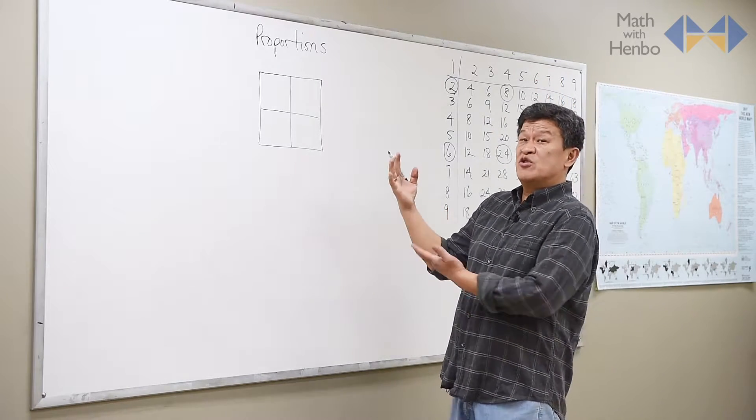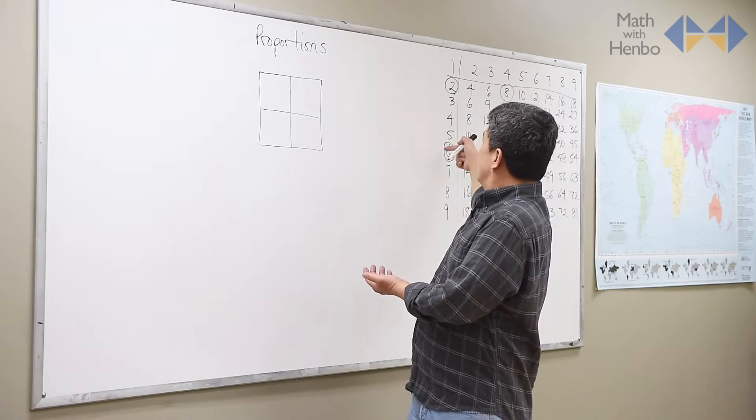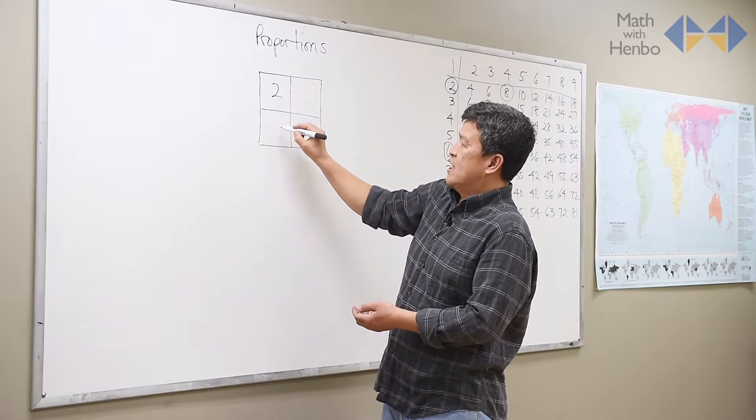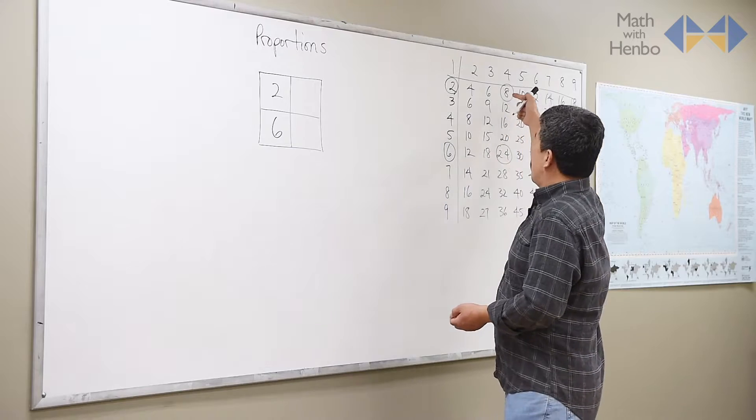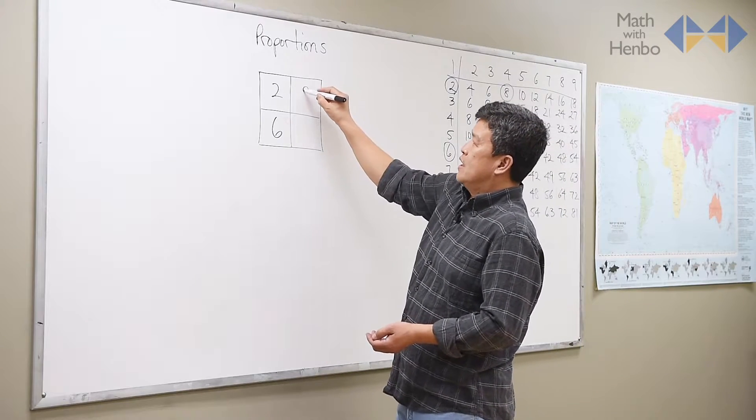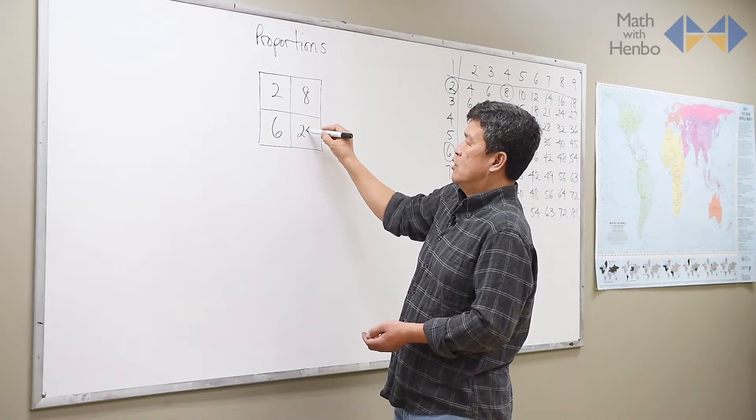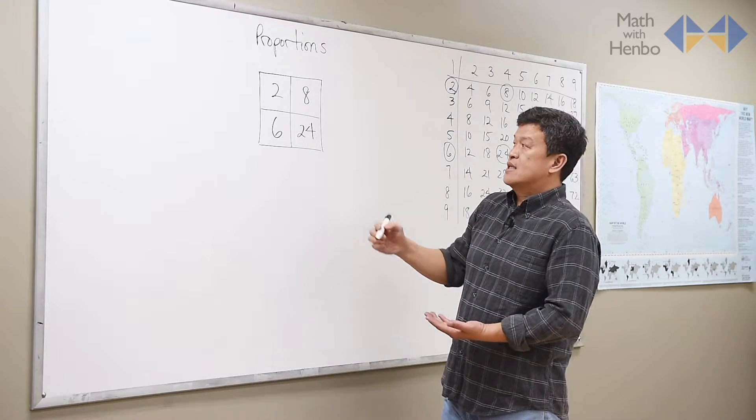Here, what I want to do is use a box like this. What I do is write 2 and 6 in the same column, and then 8 and 24 in the other column, like so. And I want you to see this.